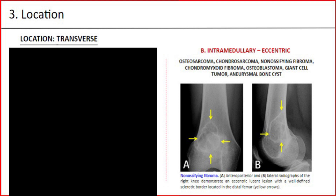Intramedullary or eccentric, seen in osteosarcoma, chondrosarcoma, non-ossifying fibroma, chondromyxoid fibroma, osteoblastoma, giant cell tumor, and aneurysmal bone cyst. Example — non-ossifying fibroma: anteroposterior and lateral radiographs of the right knee demonstrate an eccentric lucent lesion with well-defined sclerotic borders located in the distal femur.